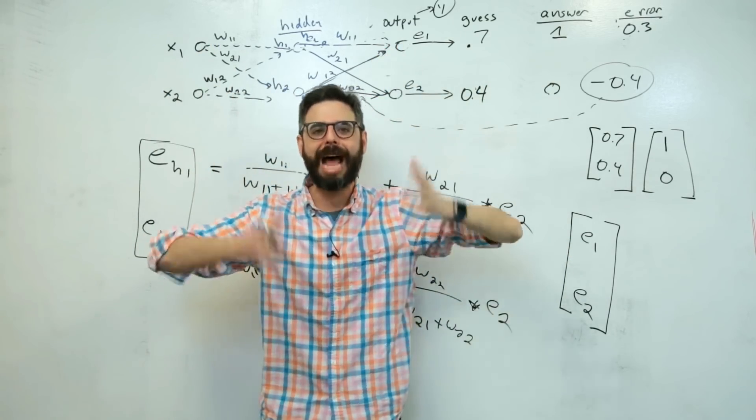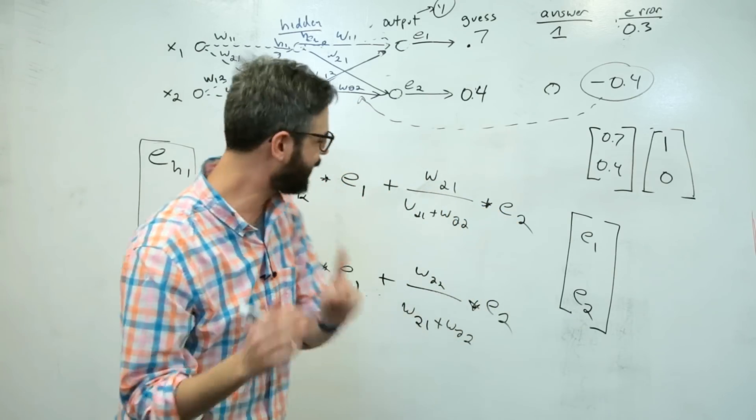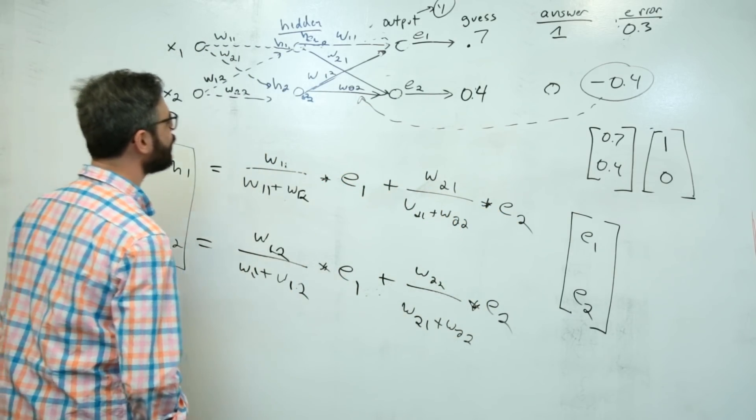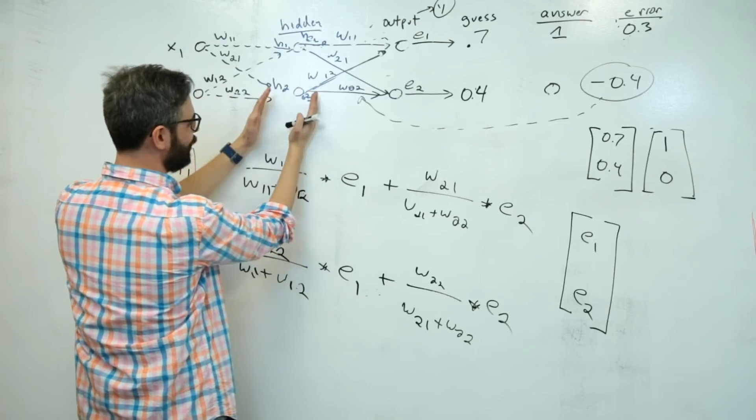Just to take this one step further - if I were to have two outputs and a second target, we could see these are the guess outputs, this is the target, and these are the errors. So we have now written into our code all the pieces we need to get the output errors. The next step is to calculate the hidden errors.